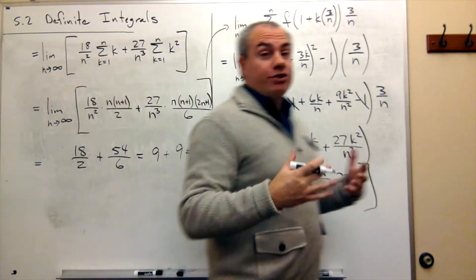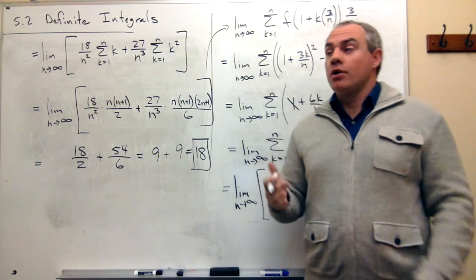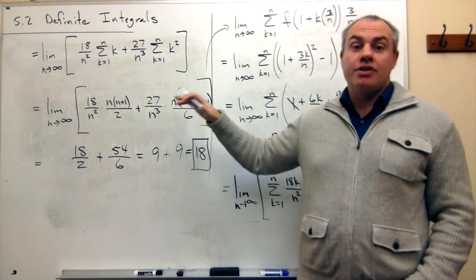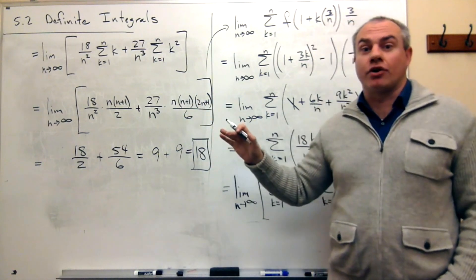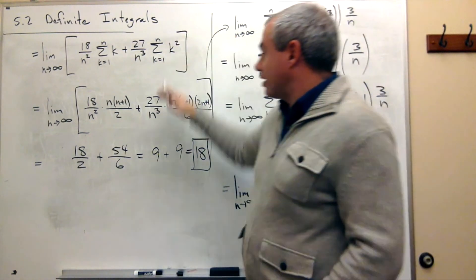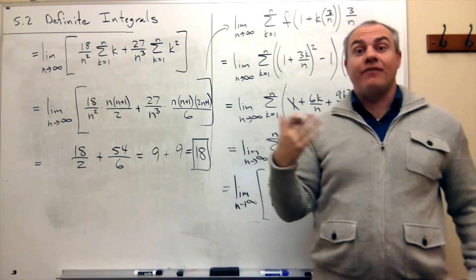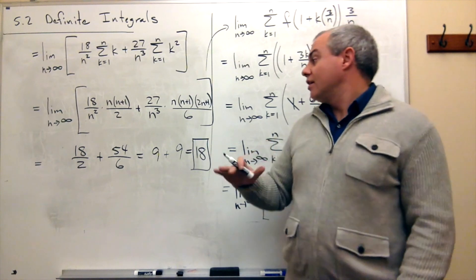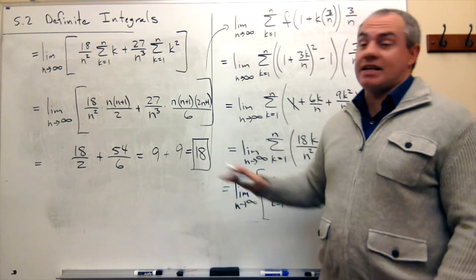We did a bunch of work here, but what were we actually trying to do? We were trying to take the definite integral using the definition of the definite integral. We went through all this work and got down to 18. In other words, the definite integral that we started with comes out to being 18.